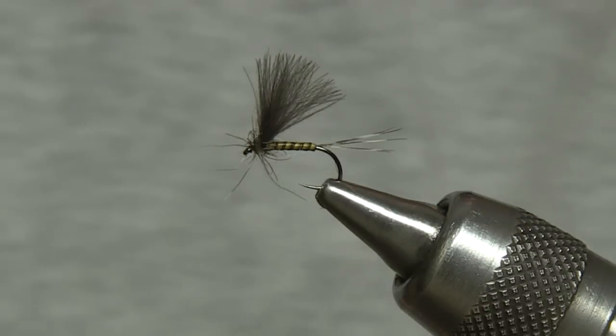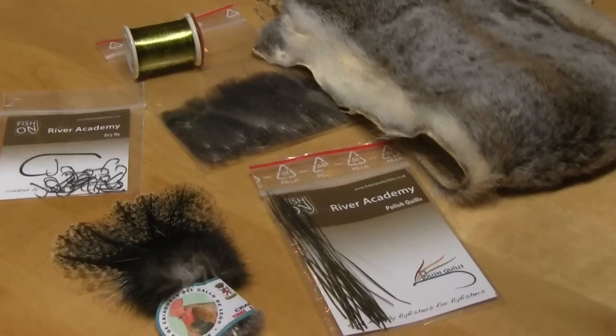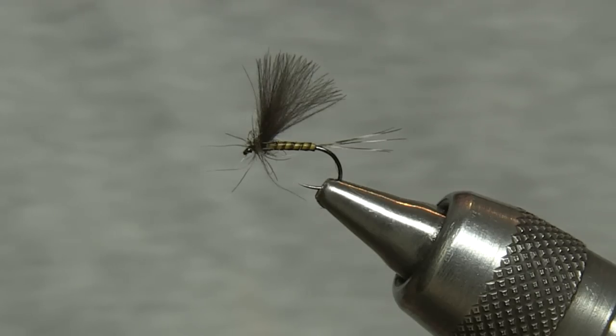This is a quill-bodied olive with a CDC wing tied on a size 16 River Academy dry fly hook. We're using olive ultimate tying silk, a tail of Coch de Leon. The body is an olive dyed quill and the wing is natural grey CDC.